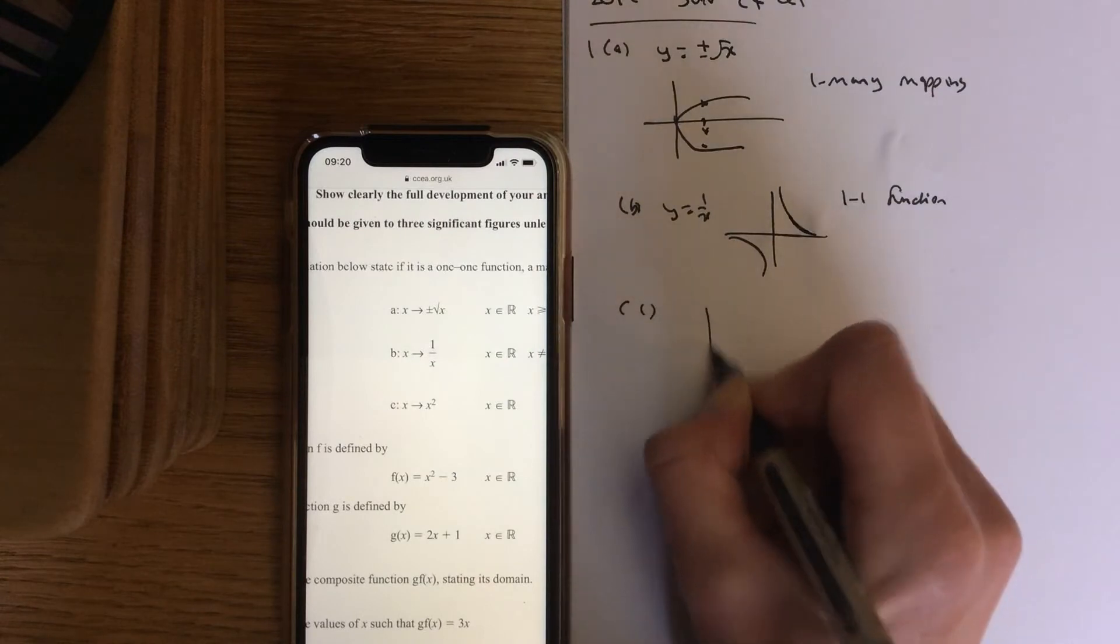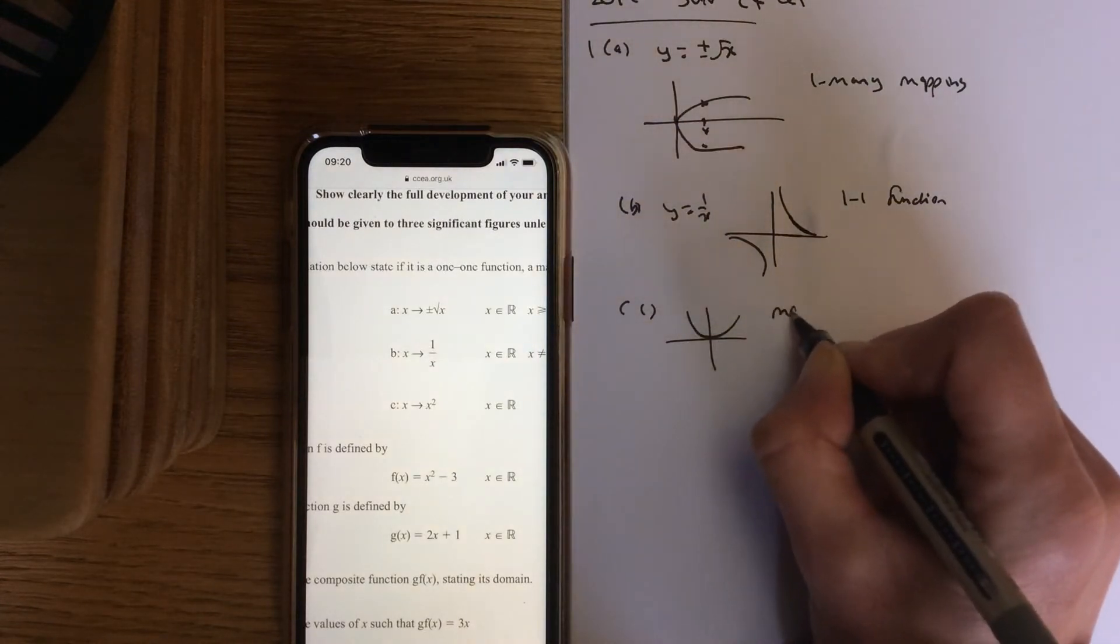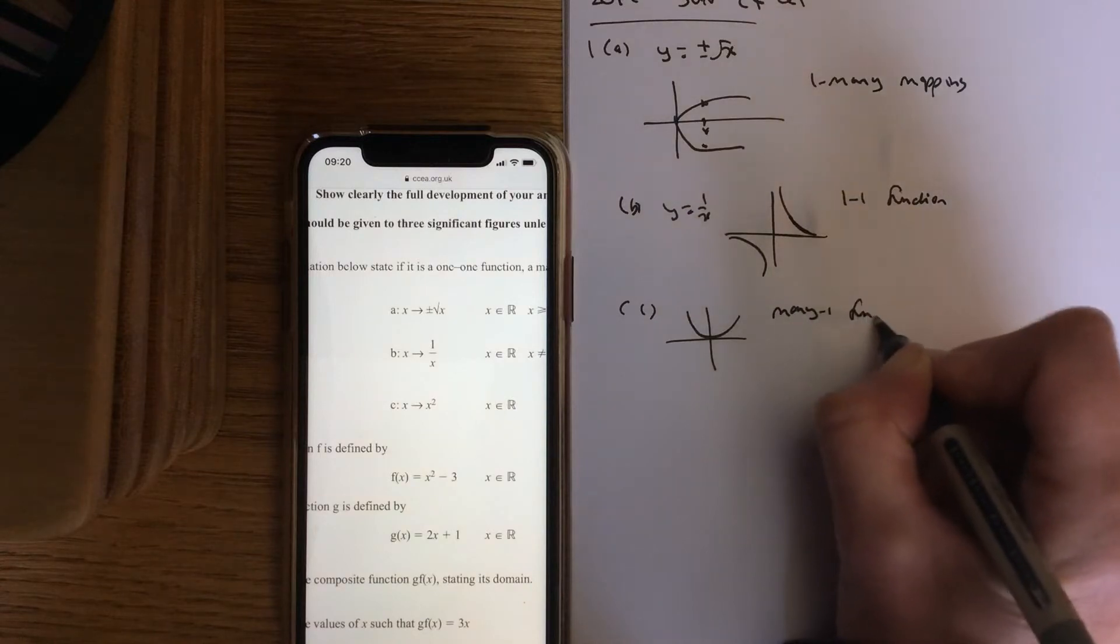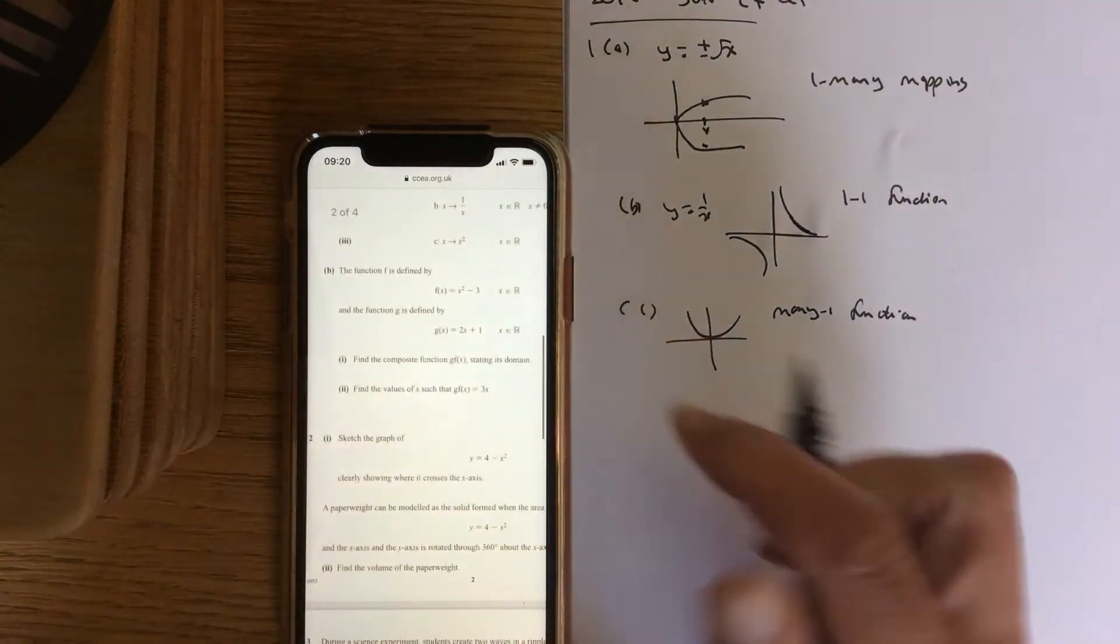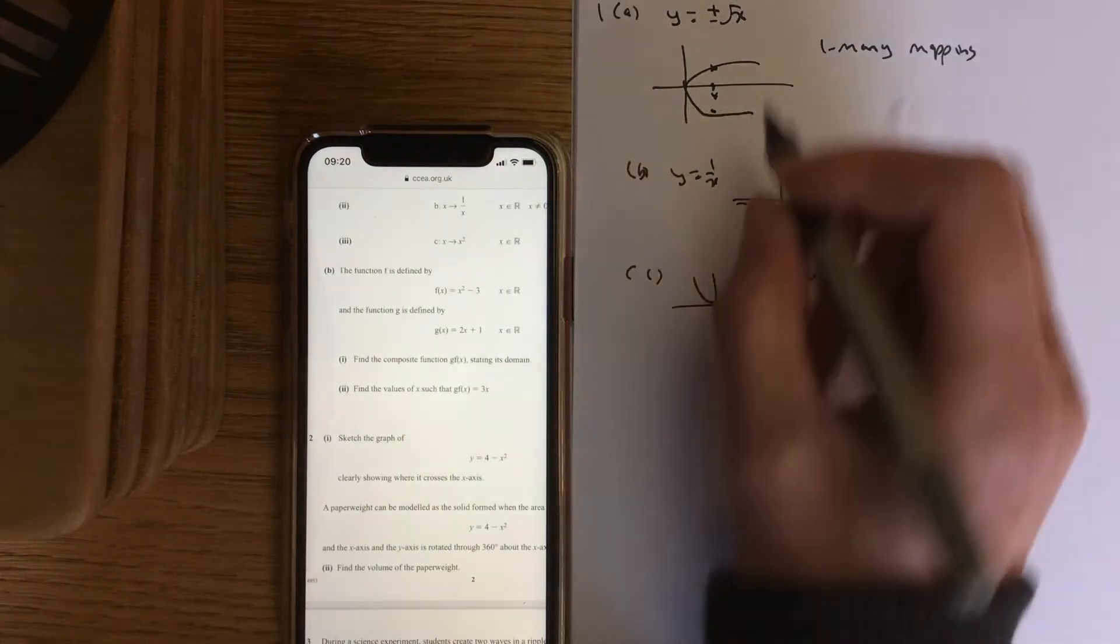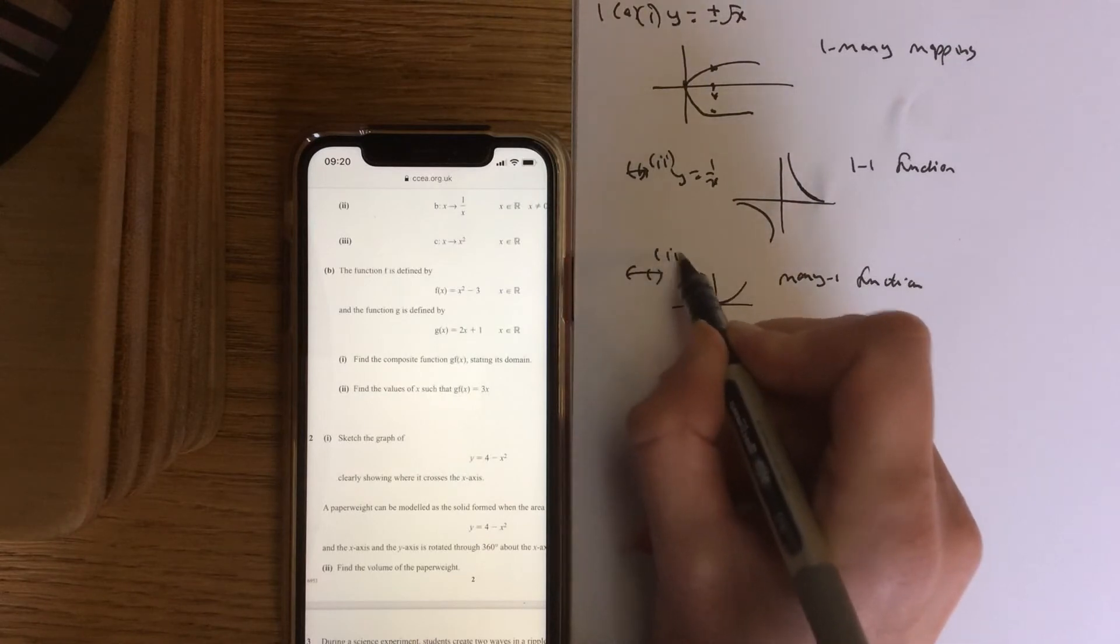Part C, x squared graph. Two x's can give the same value of y, so it's a many to 1 and that's a function. Part B, that was part 1, that was part 2, that was part 3.